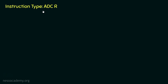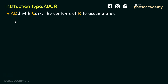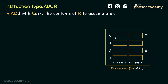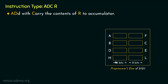Coming to the instruction type ADCR, it stands for 'add with carry the contents of R to accumulator.' We are talking about all the GPRs along with the accumulator register. Since we are considering capital R, as mentioned in the previous session, we also include the memory element which will be pointed by the HL register pair. So the contents of R will be added to the accumulator's content along with carry.